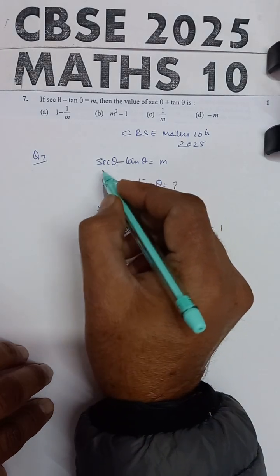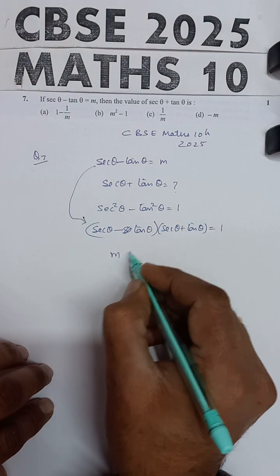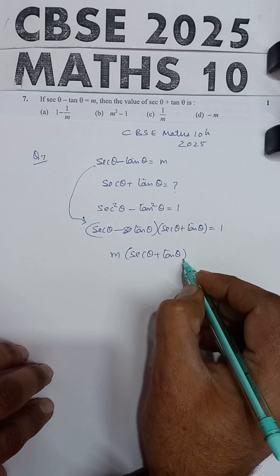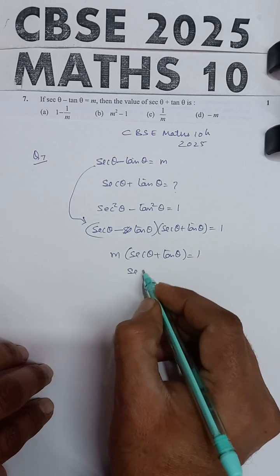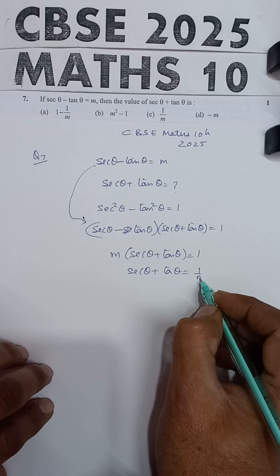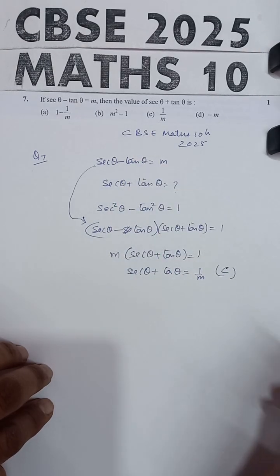Now sec theta minus tan theta, this value can be substituted. M into sec theta plus tan theta equals 1. So this is the answer and this is given in option C. So option C is the correct answer.